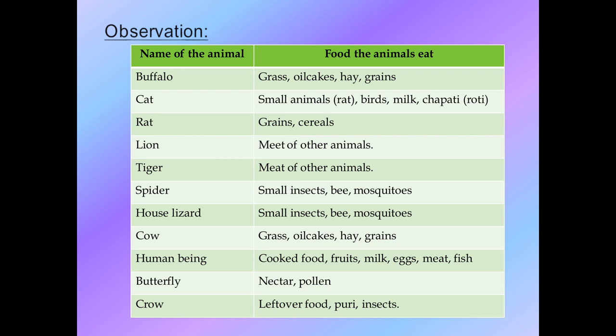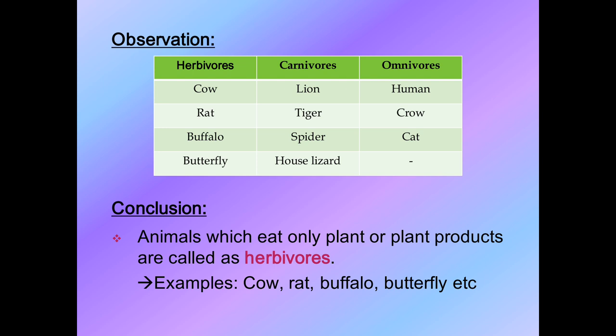Human beings eat both meat and vegetables - both plant and animal products - so human beings are in the omnivorous category. Butterfly consumes only nectar and pollen, which are completely plant products, so butterflies are herbivores. Crow eats leftover food including both meat and plant items like puri, chapati, and insects - so crow is omnivorous. Summary: herbivores include cow, rat, buffalo, butterfly; carnivores include lion, tiger, spider, lizard; omnivores include human beings, crow, and cat.